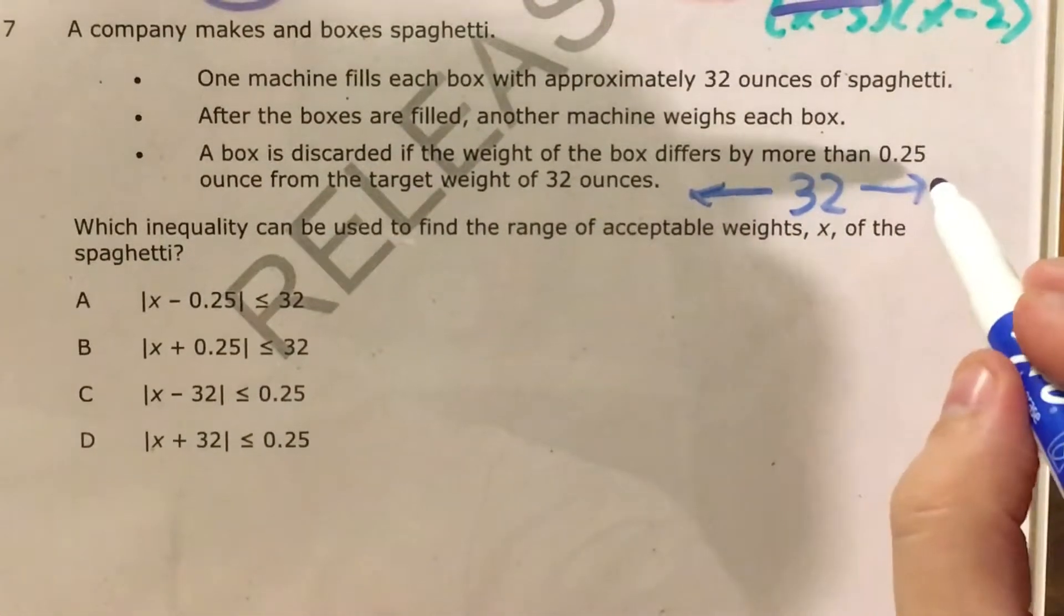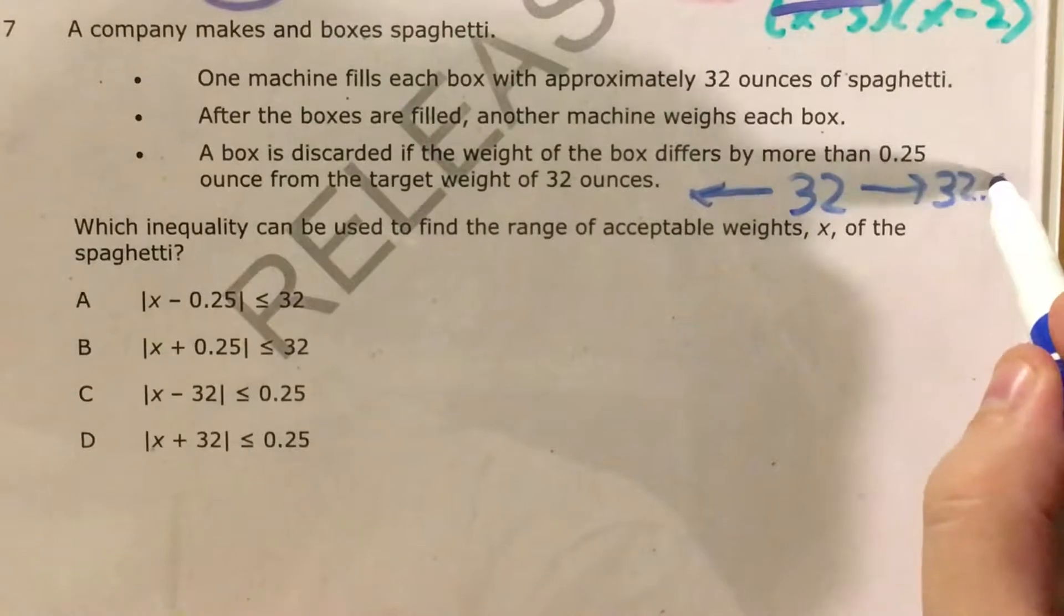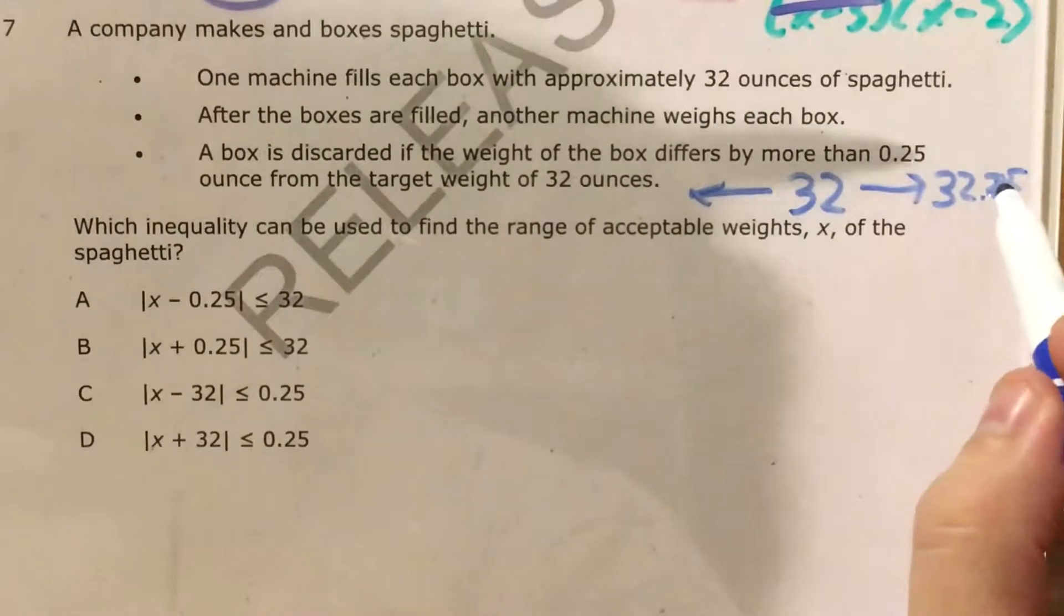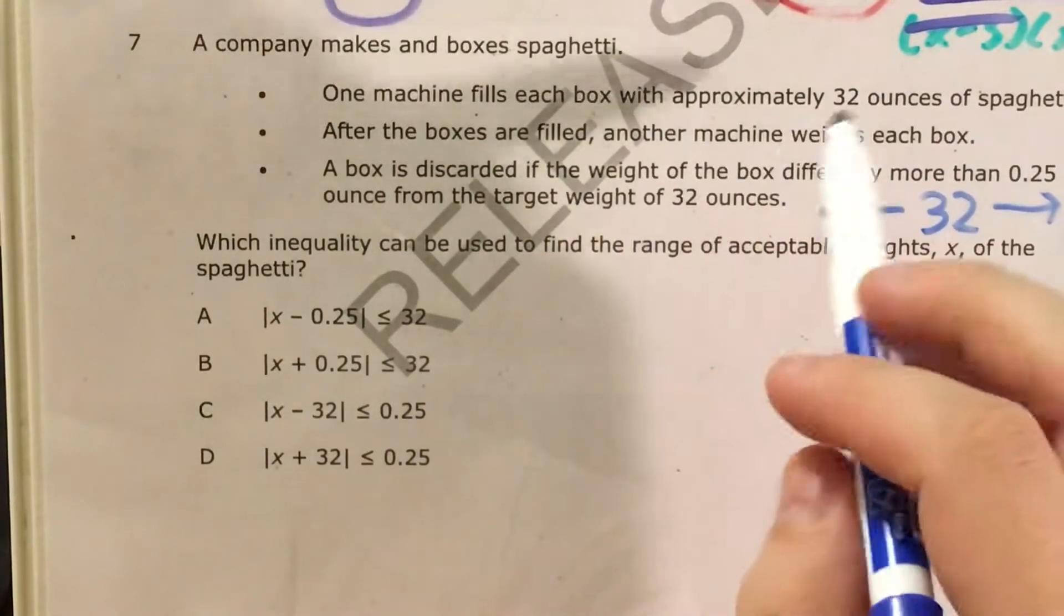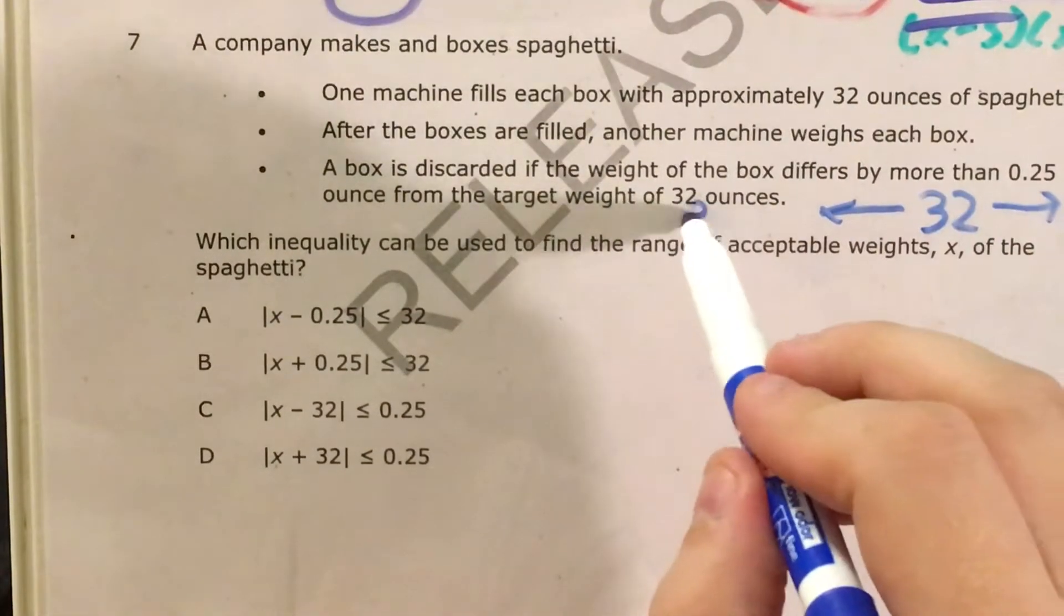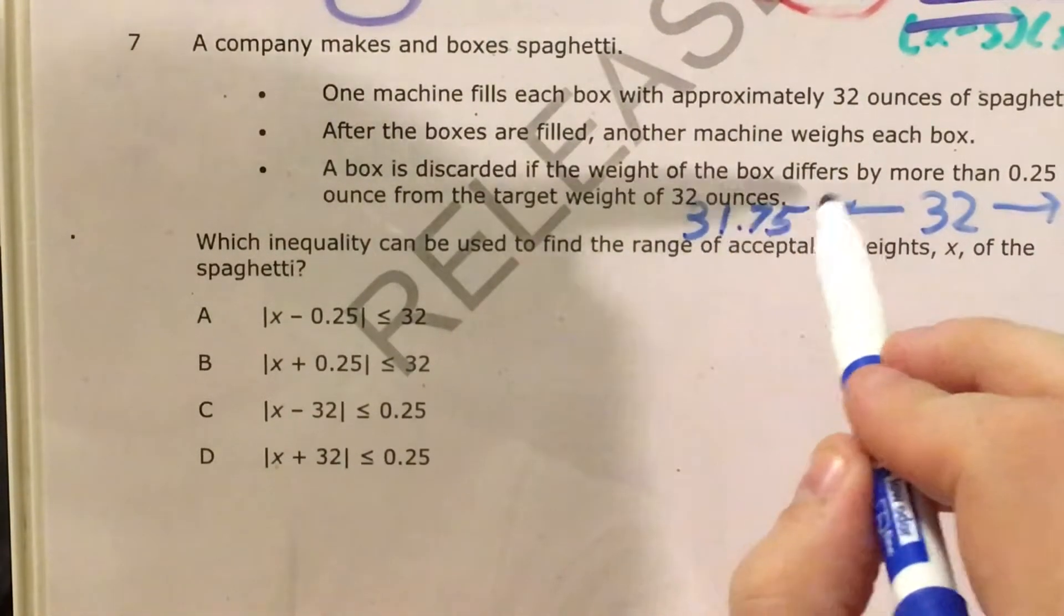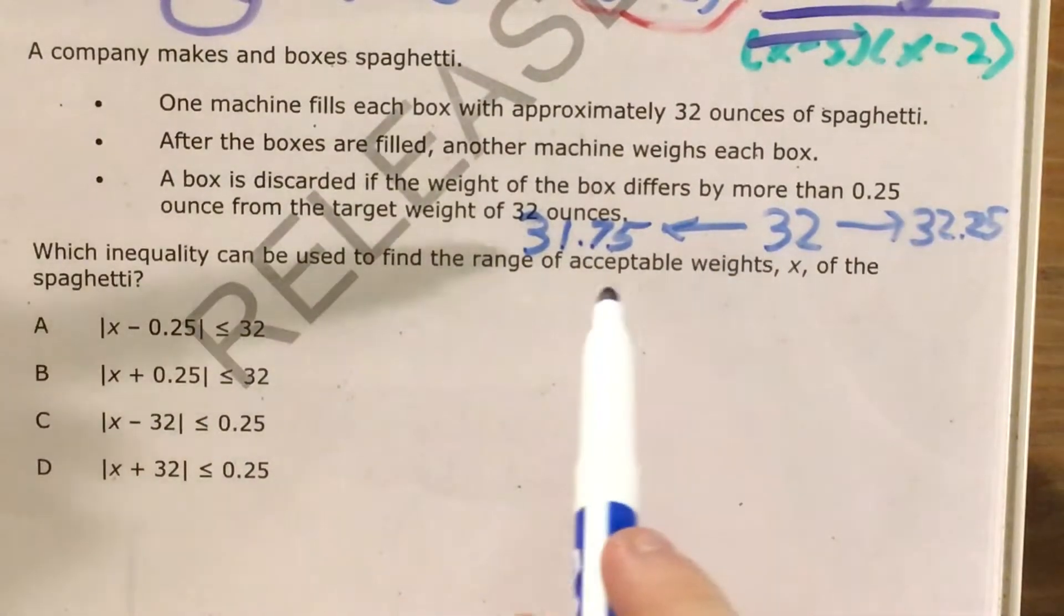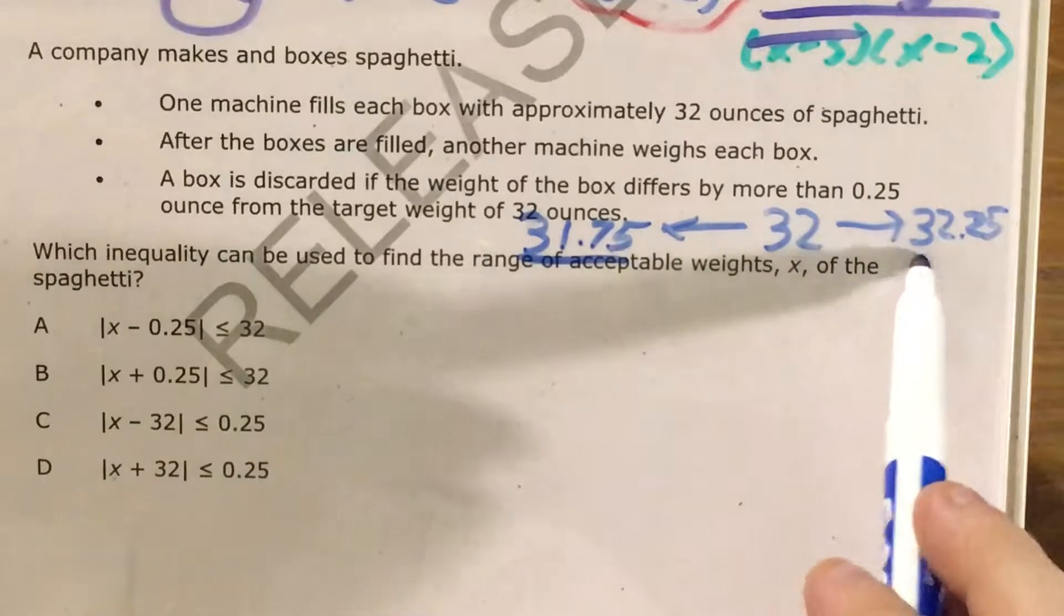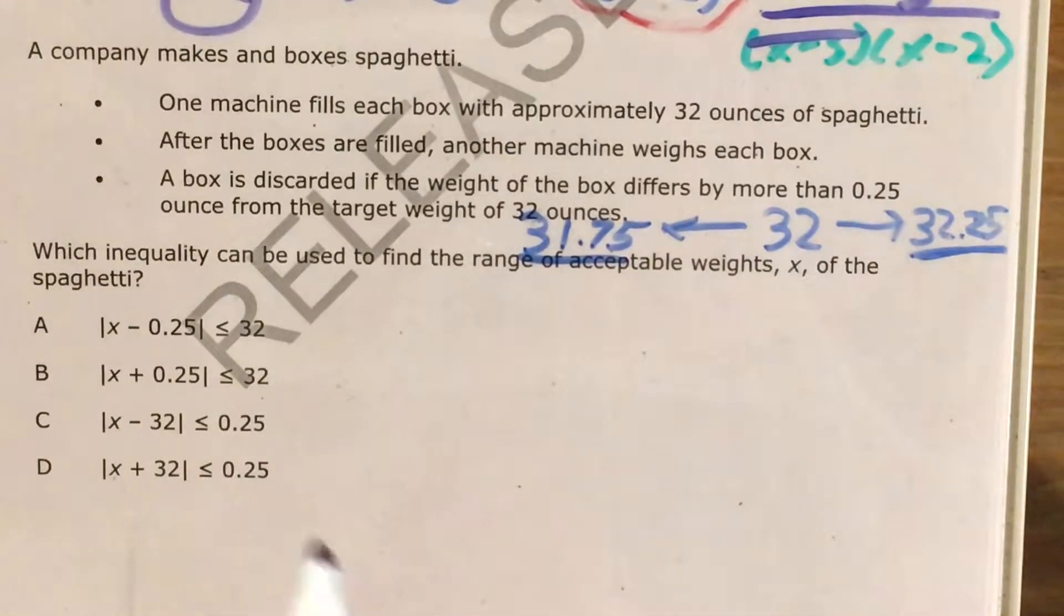If it's less than 32, it can be at least 31 and three quarters. So I know that my range of acceptable weights is somewhere between these two numbers, and I'll actually use the fact that I know this is C to prove this.